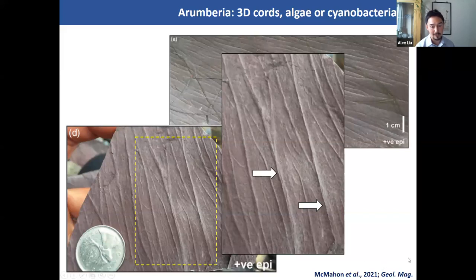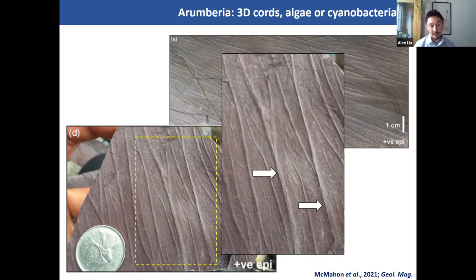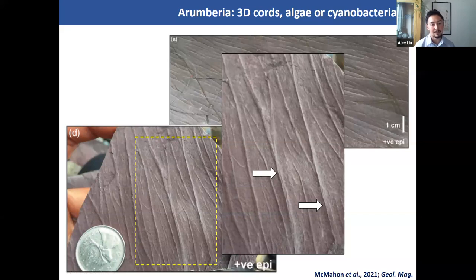To summarise: in deep water settings in Avalonia, we have lots of fronds, possible sponges, possible cnidarians, and trace fossils. In shallow water settings, we have lots of discoidal assemblages, a variety of microbial mat-related fabrics, these potential algal and cyanobacterial communities, and true microbial mats preserved in the sediment.